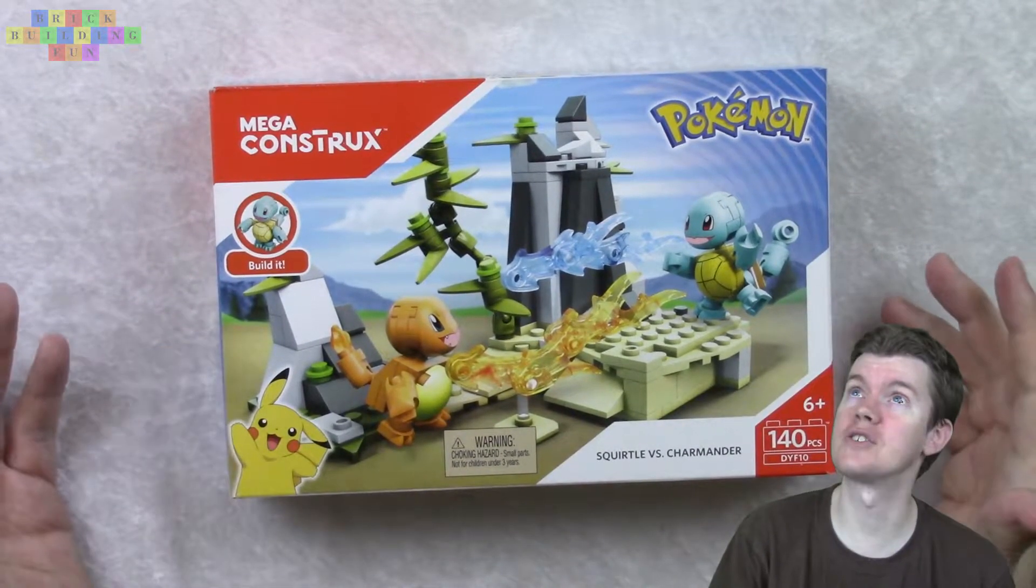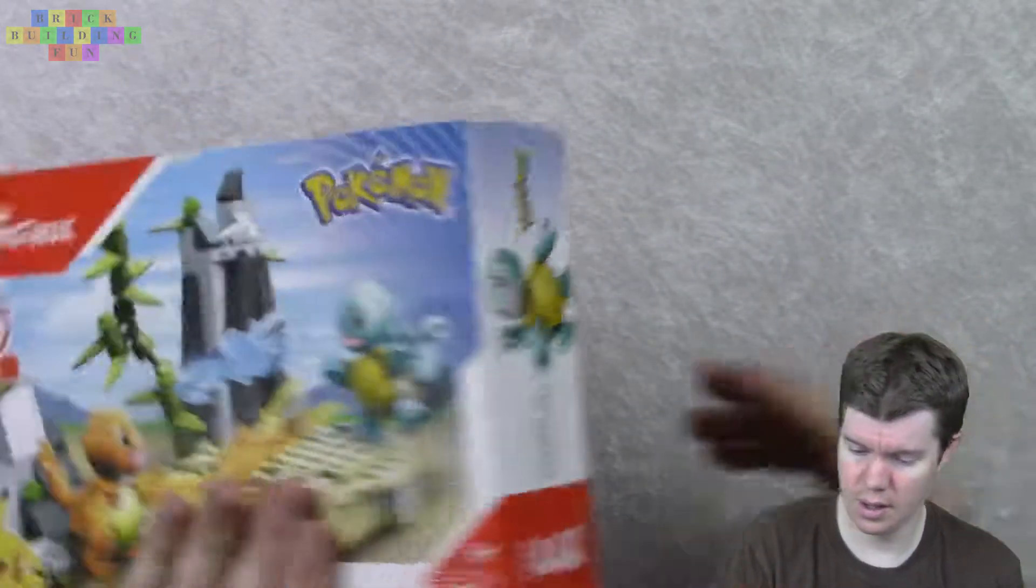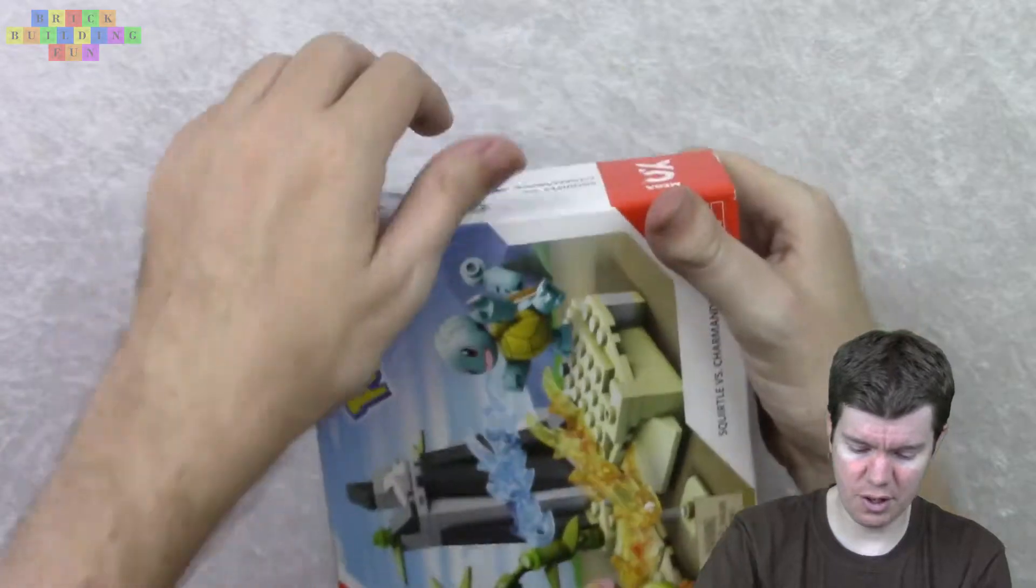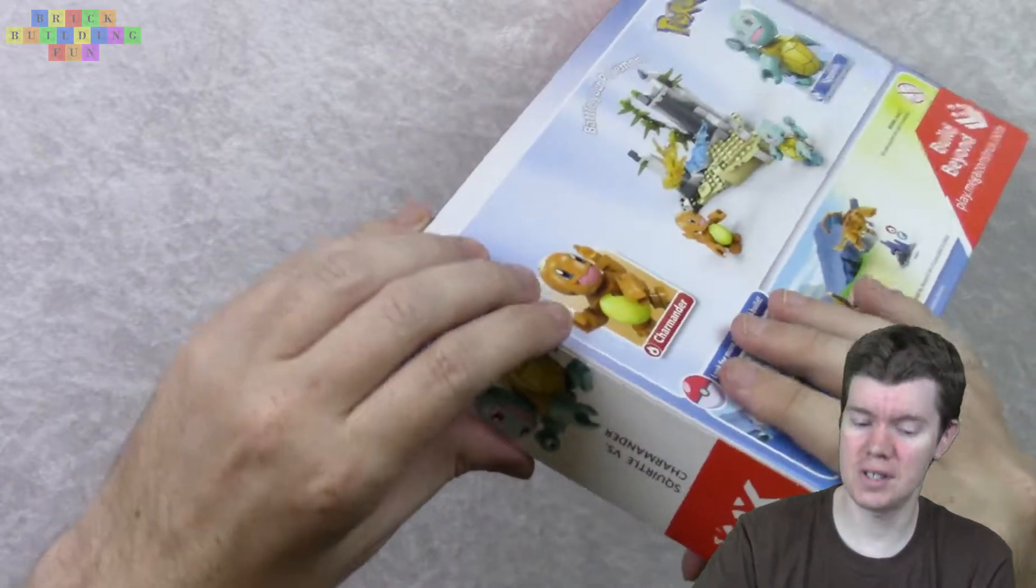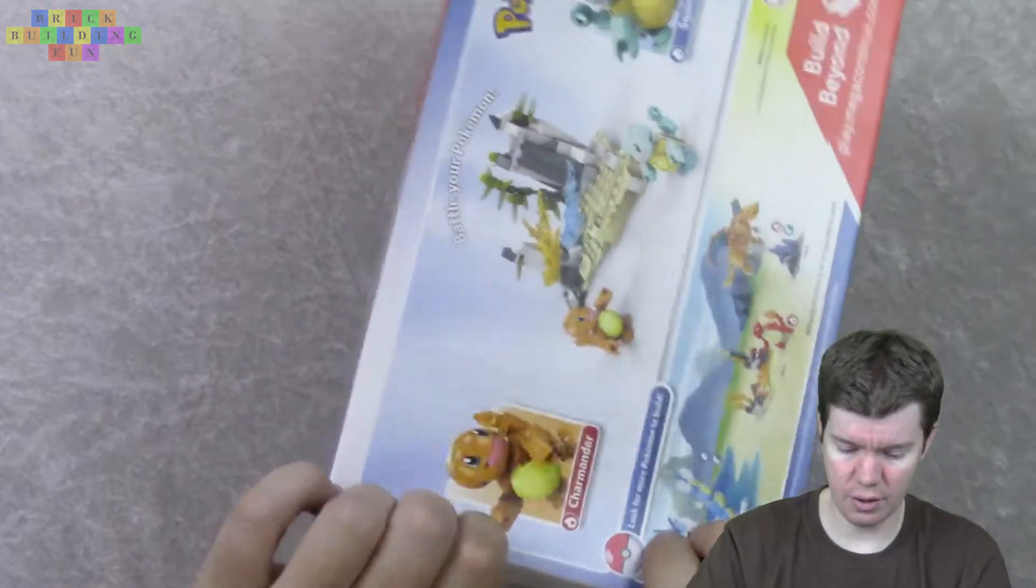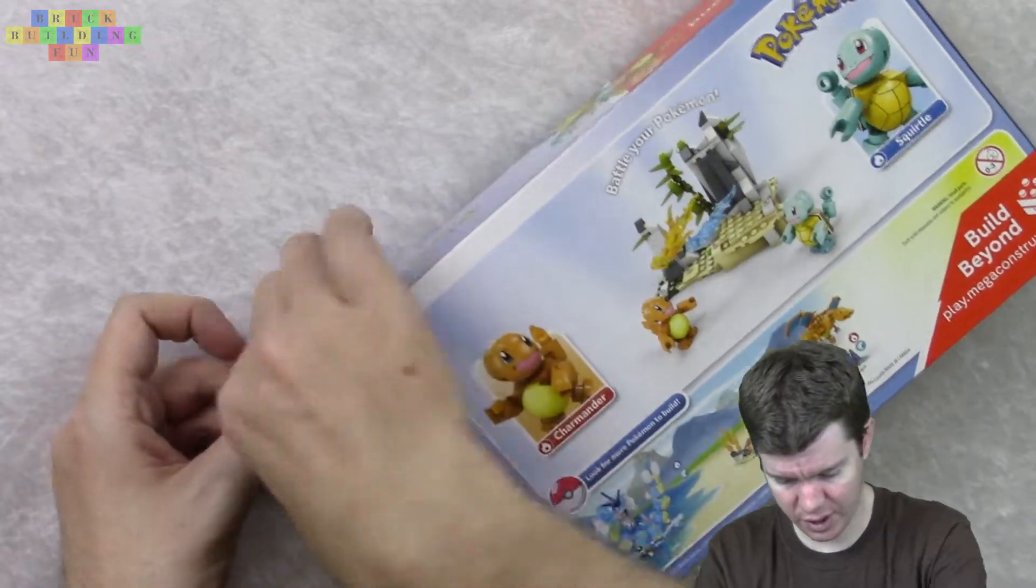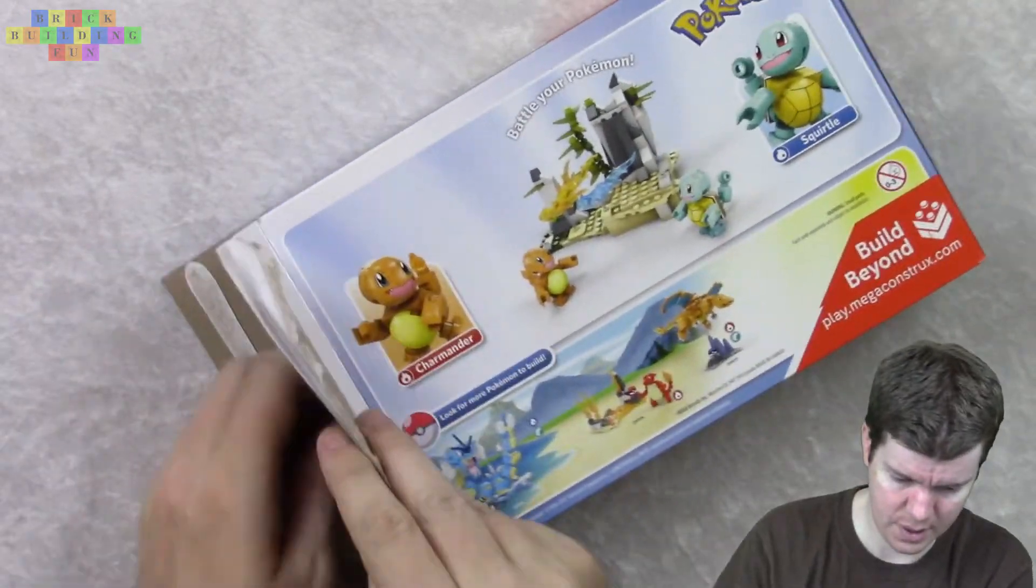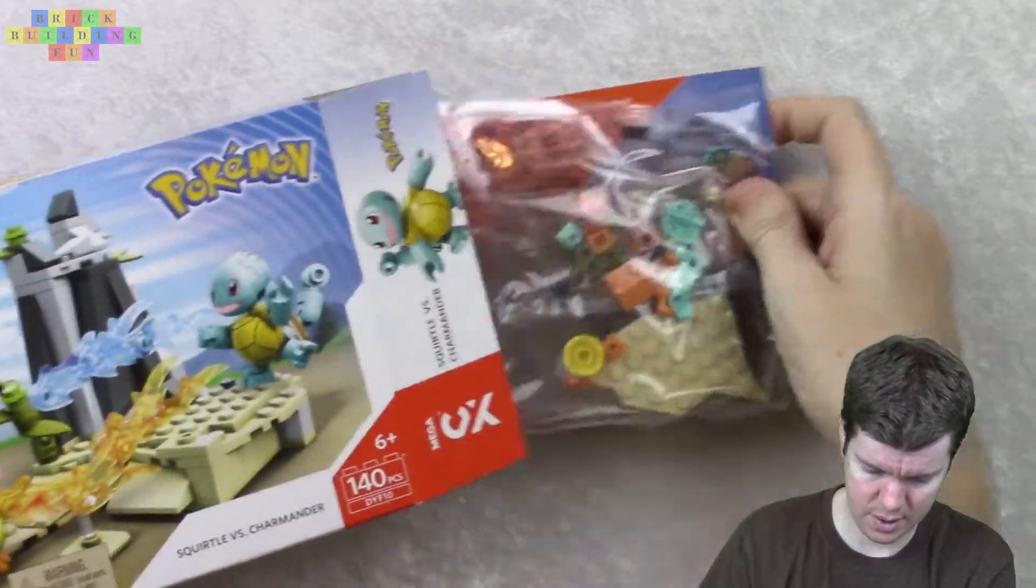I decided I would do some Mega Constructs here, see if it's any good, give it a try. There were so many Charmander Evolution sets, but I decided to go with this one because I don't have any of them yet. And it seems like if you're gonna start with something, it should be with the most basic.